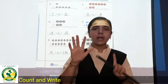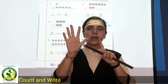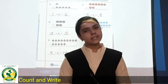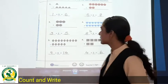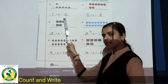How many? Five and one is equal to how many? Six. Yes. So we will write here six.